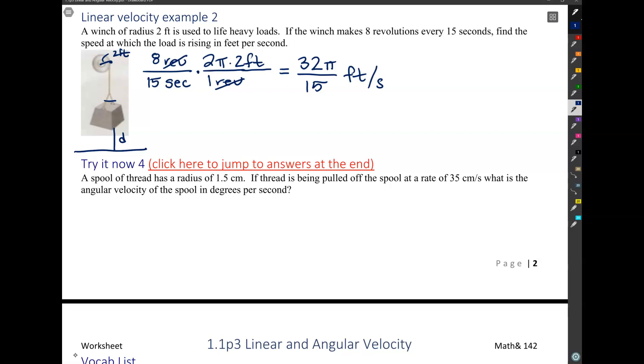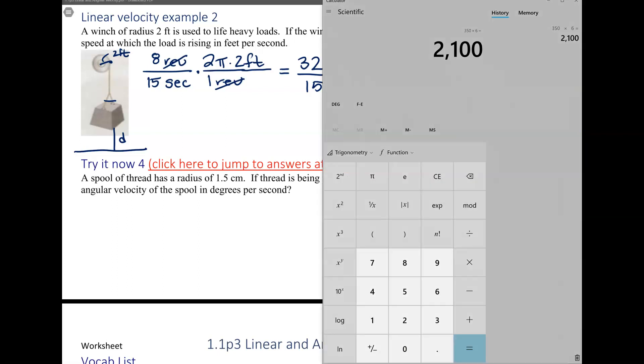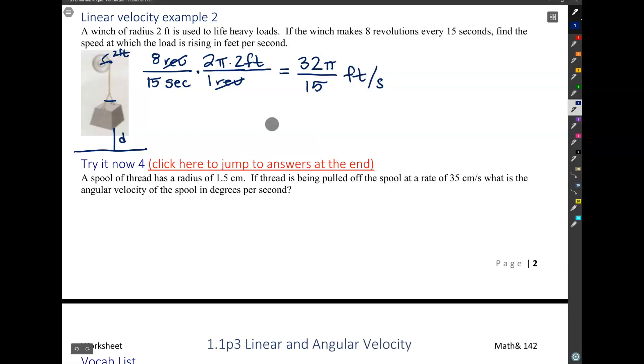But I still feel like if somebody was actually interested in the answer to this question, they probably wouldn't be super thrilled with 32π over 15 as an answer. So if we go 32 times π over 15, we get about 6.7 feet per second.